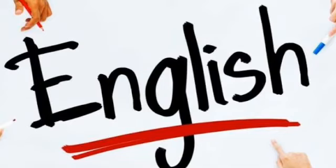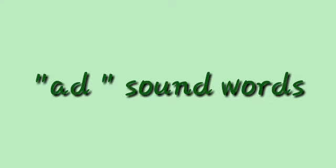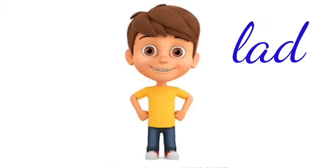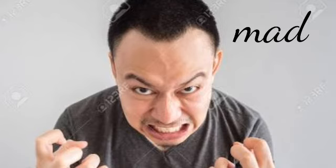Now children, this week ma'am is going to teach you about English. Last week you all learned about 'ad' sound words, and you are all thorough in writing them. Let us recall the ad sound words: lad, pad, sad, mad. Now this week we are going to learn about 'ab' sound words — another type of A sound words.